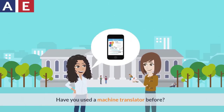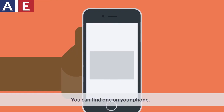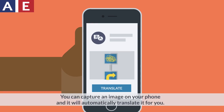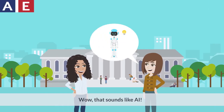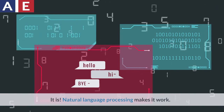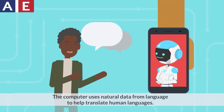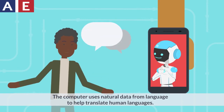Have you used a machine translator before? No, what is it? You can find one on your phone. You can capture an image on your phone, and it will automatically translate it for you. Wow, that sounds like AI. It is! Natural language processing makes it work. The computer uses natural data from language to help translate human languages.